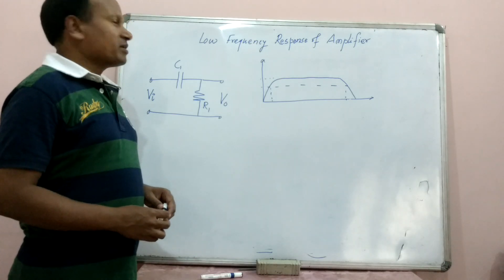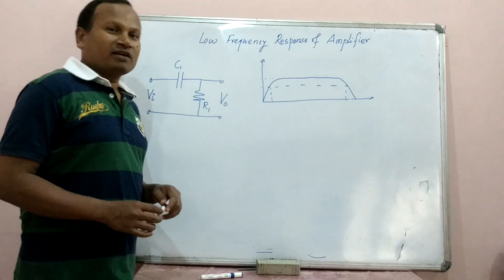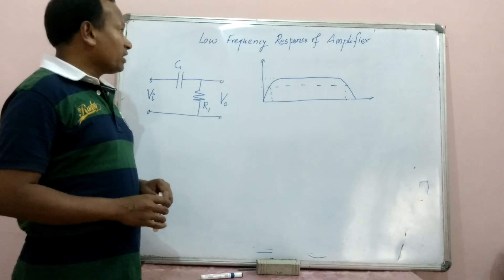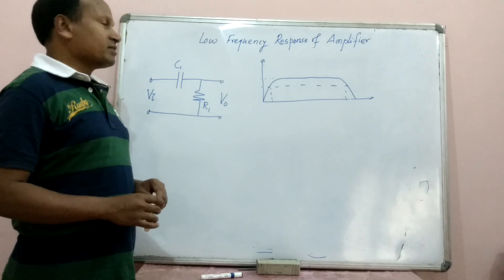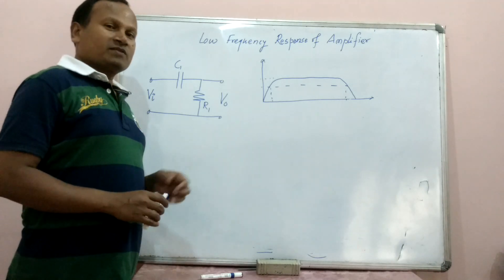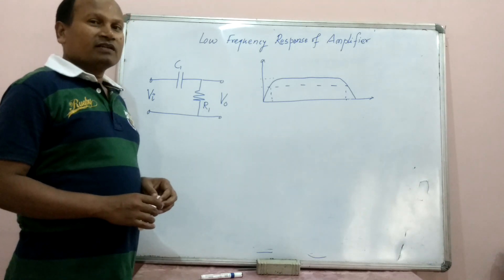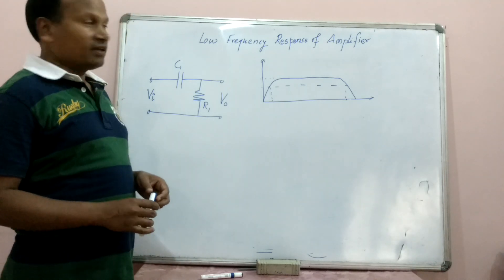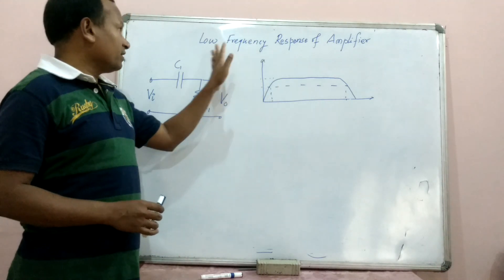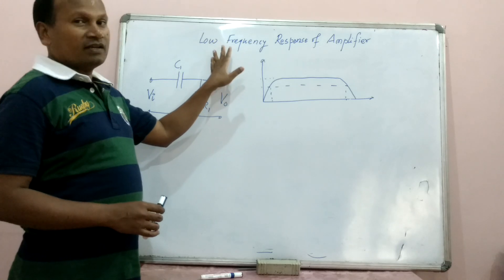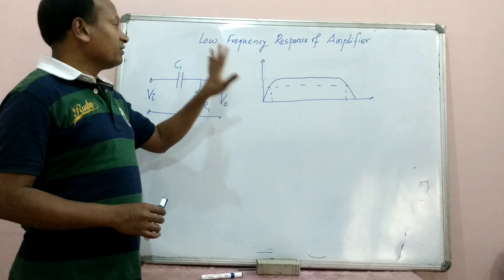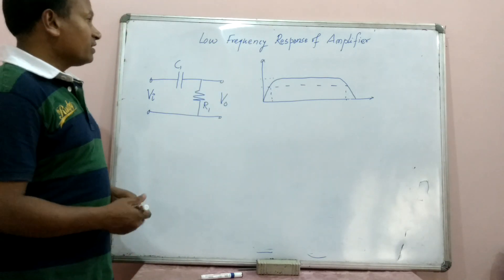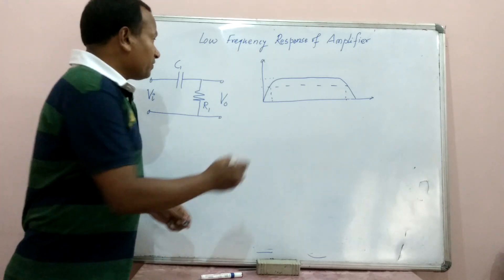We are discussing the low frequency response of an amplifier. We have already discussed in our previous lecture the high frequency response of an amplifier, which is similar to the response of a low pass filter. Now we are discussing the response of an amplifier in the range of low frequency. We can see this is the complete response of an amplifier.